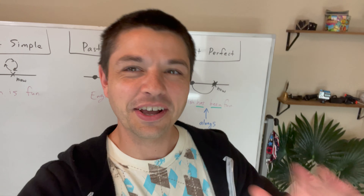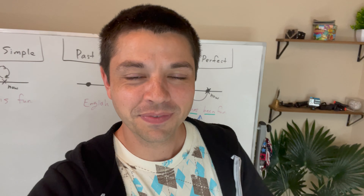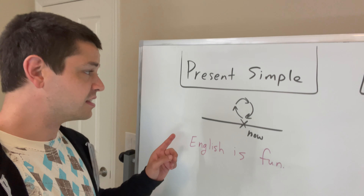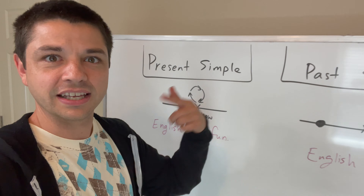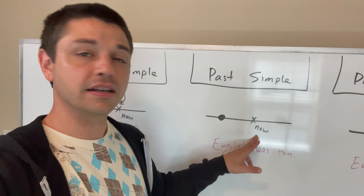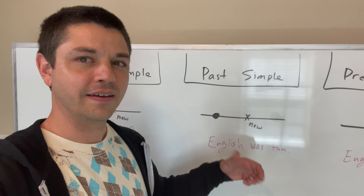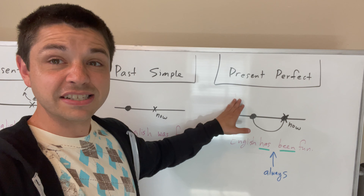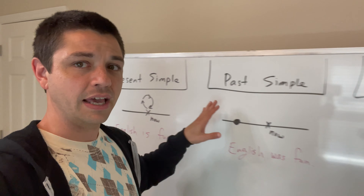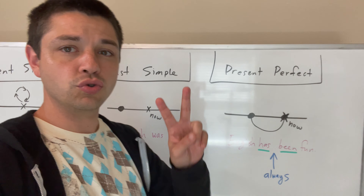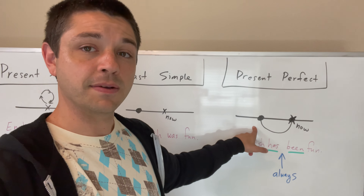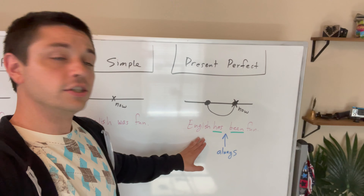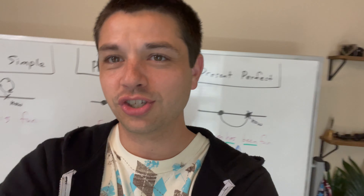For example, we could say 'I walk to the office,' 'I work from home,' 'I go shopping.' These are present simple actions — they're repeated, they happen again and again. That's present simple. And here's an example: 'English is fun,' especially after you watch my YouTube videos. Now, past simple is much simpler. In past simple, we have 'now' — the present moment — and then we have something that happened in the past. So you might say 'English was fun.' Past simple tells us about something that happened before now; it's finished — one thing in the past, finished.